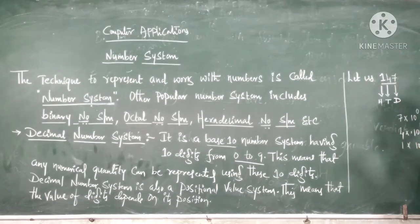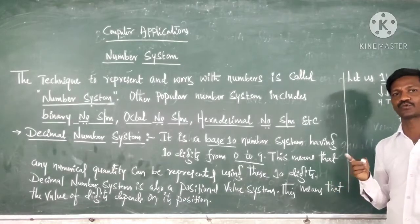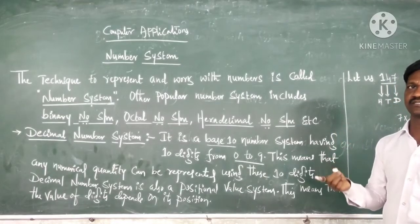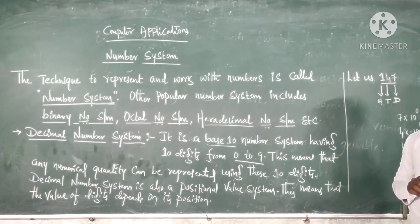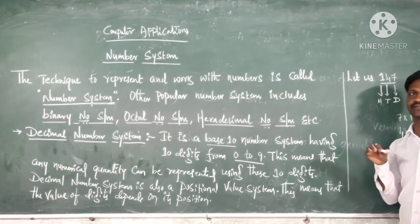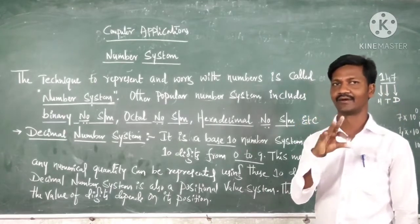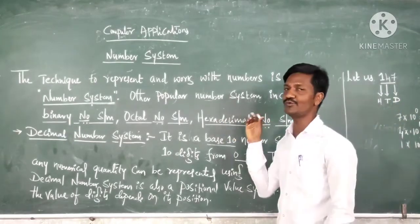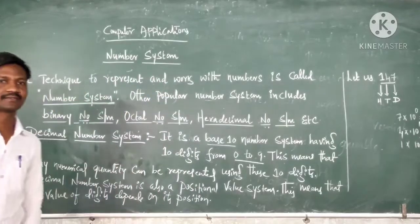Not only ten to the power zero — it may sometimes be two to the power zero, which is again considered as one. Sometimes eight to the power zero — it is also considered as one. I hope the position concept is clear. Then we have to study the number system.